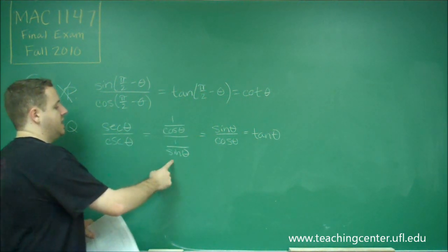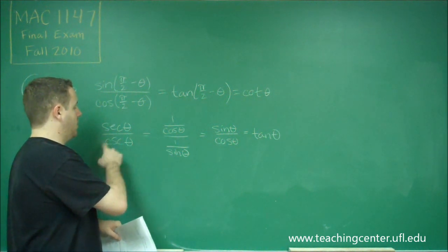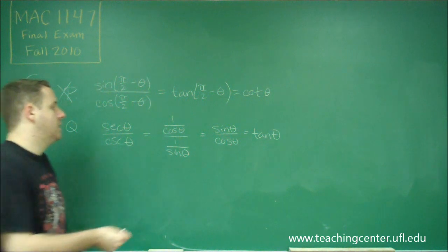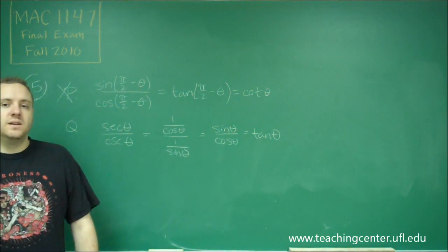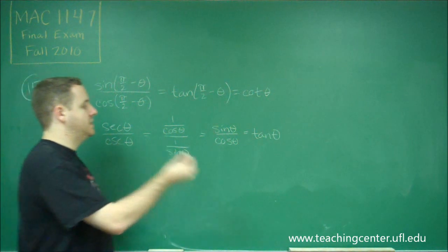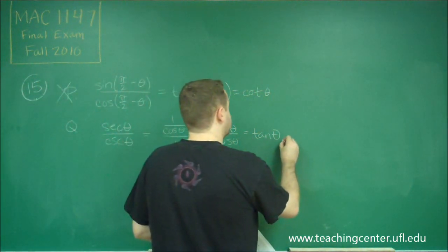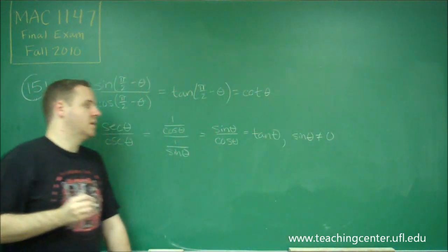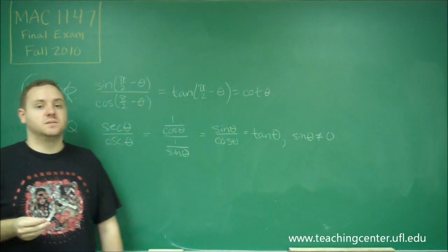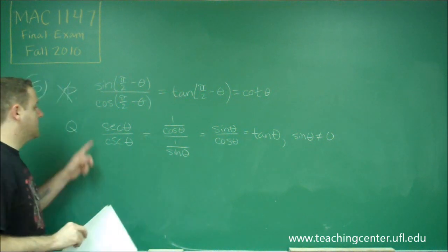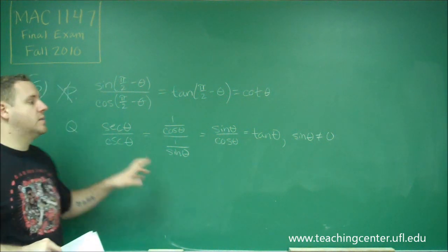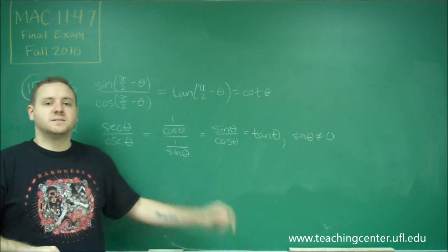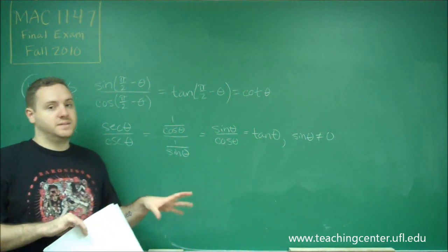However, this is also saying that sine theta cannot be 0 or else we wouldn't have had cosecant theta to start with. That is actually okay in the normal tan theta graph. So this is equal to tangent theta as long as sine theta is not 0. This is not going to be the same because our domains are different. Secant over cosecant is only equal to tangent of theta as long as you don't have an angle that makes sine of theta equal to 0.